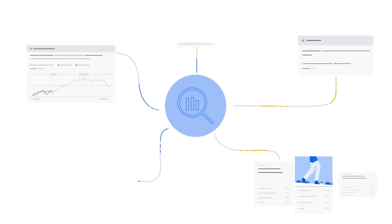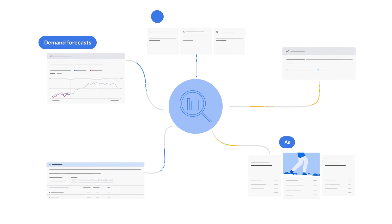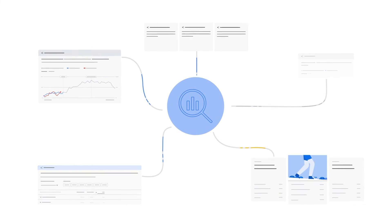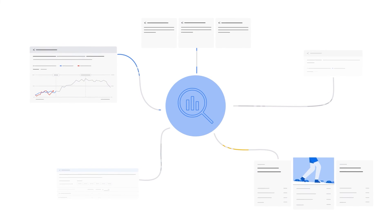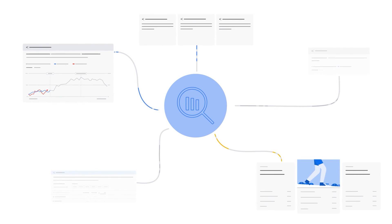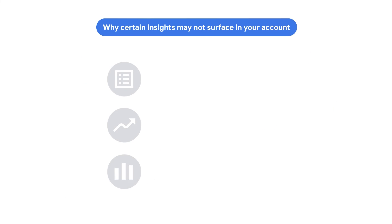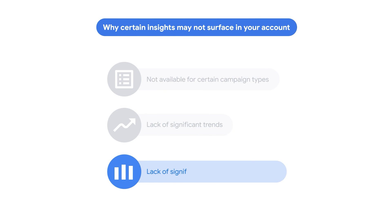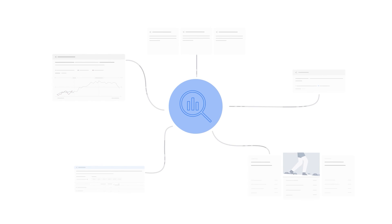These are just five of many insight cards available to help answer your most strategic business questions. Note, each insight type won't always be available for every account or campaign at all times. Each insight has specific criteria for it to surface. Common reasons for insights not surfacing are that they might not be available for certain campaign types, there's a lack of significant trends, or a lack of significant changes in performance. If you don't see insights in your account, check back again soon.